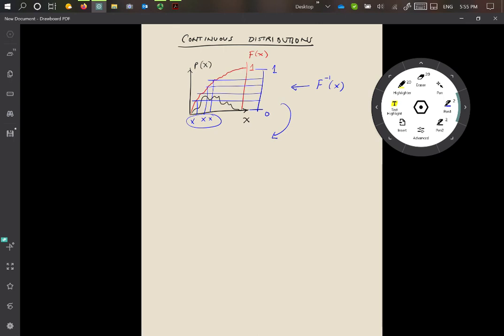So to be more precise, we can say that if u is a random variable that's distributed uniformly randomly in the range 0, 1, then x, the random variable x is distributed as f inverse of u.